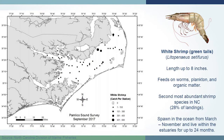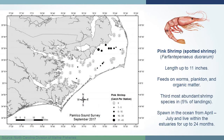White shrimp account for the second most landings, about 28%, ranging from about eight to eleven inches. Their lifecycle is notable — even though shrimp congregate in the sounds, they actually spawn in the ocean and then larvae work their way back into the estuary. That connection between the sound and the ocean through the inlets is key. The last shrimp species you might harvest is spotted shrimp, accounting for about 5% of commercial landings.